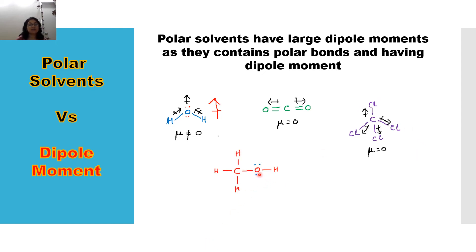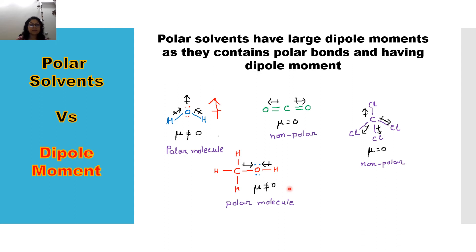In methanol, the bond dipole goes from carbon to oxygen and from hydrogen to oxygen, since oxygen is more electronegative than both. So methanol has a net dipole moment — mu is not equal to zero. Therefore, water and methanol are polar molecules because they have a significant dipole moment, whereas carbon dioxide and CCl4 are non-polar because their dipole moment is zero, even though their individual bonds are polar.